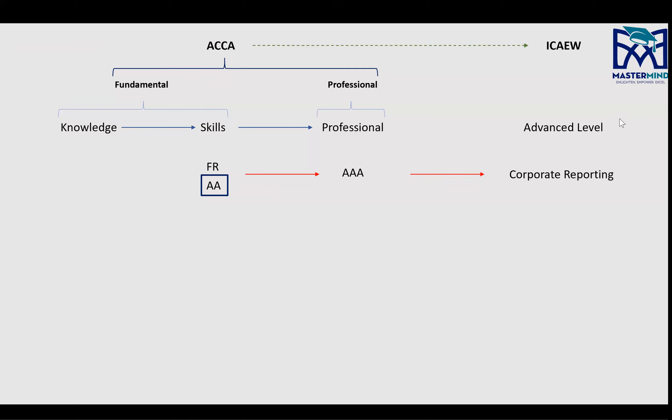AA is basically the first paper of Audit and Assurance. In your ACCA, you don't have any paper at the knowledge level that caters to AA. That's why students usually find it a bit difficult at the start. But as you go along, I've seen great responses from some very weak students because they took my advice and took it very seriously.